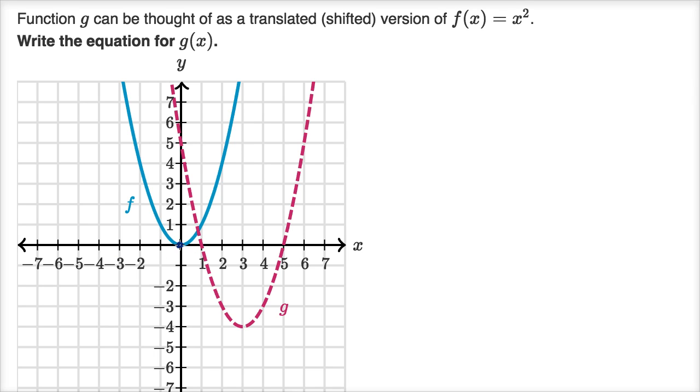And if I focus on the vertex of f, it looks like if I shift that to the right by three, and then if I were to shift that down by four, at least our vertices would overlap. I would be able to shift the vertex to where the vertex of g is.